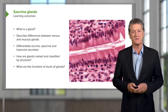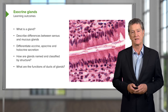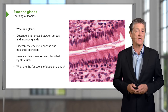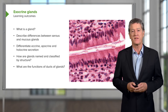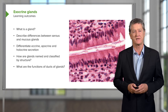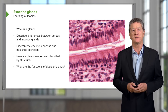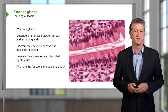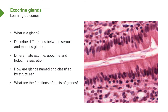Exocrine glands are very important in a number of different organ systems. It's important that you understand what a gland is and know that these glands form two major categories — they're either serous secreting or mucus secreting. You also need to understand how glands secrete their components, how we classify and name them, and importantly, understand the duct system of these glands, because these ducts within some glands modify the secretion product produced by the secretory cells.